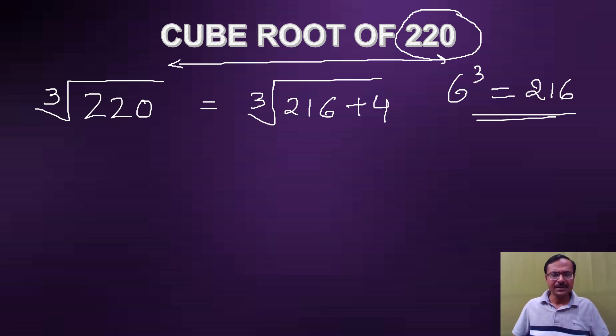Now, since my number 220 is slightly bigger than 216, my answer will be bigger than 6. So 6 point something should give me my answer. That's obvious, but what's the exact thing? I want the exact thing up to 2 to 3 decimal places. For that you need to perform a small calculation.